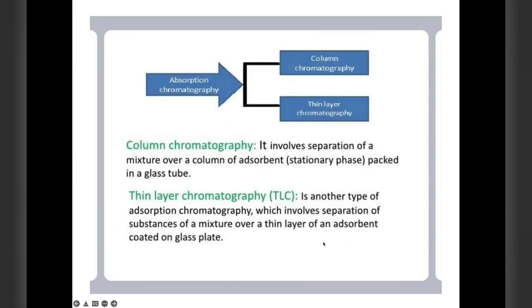In adsorption chromatography, it is divided again into column chromatography and thin layer chromatography. Column chromatography involves separation of mixture over a column of adsorbent, that is a stationary phase, which is packed in a glass tube. Then thin layer chromatography, also known as TLC, is another type of adsorption chromatography. It involves separation of substances of a mixture over a thin layer of adsorbent which is coated on a glass plate.